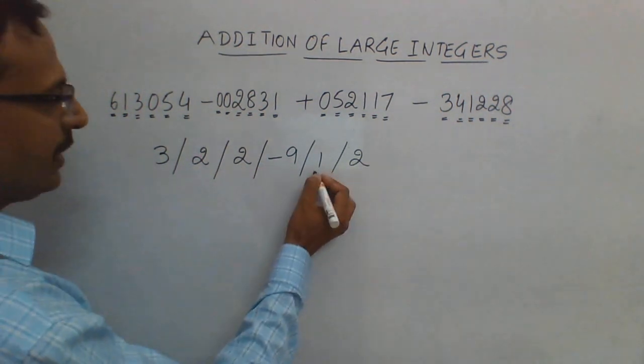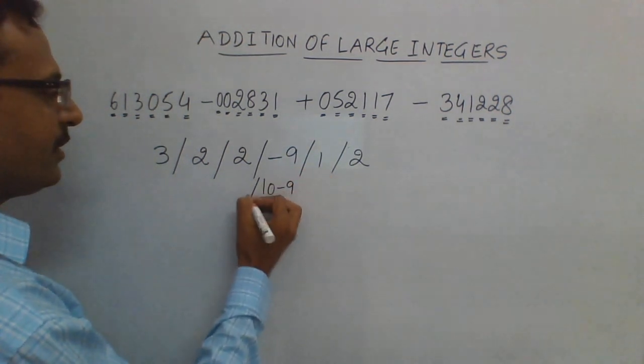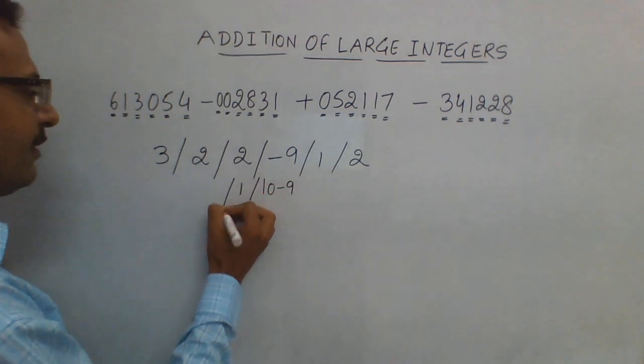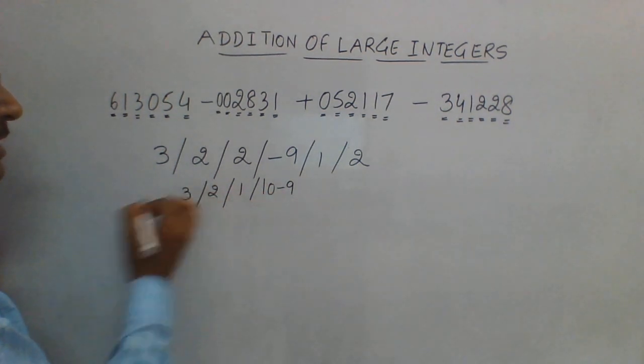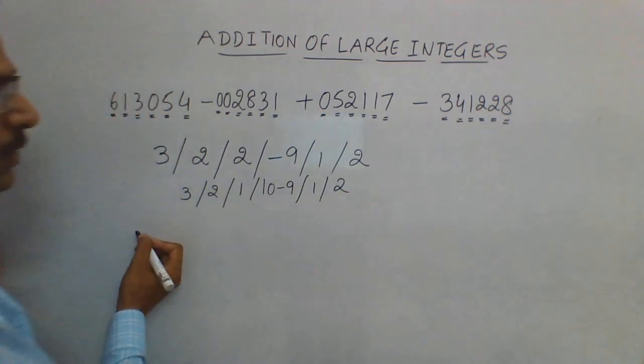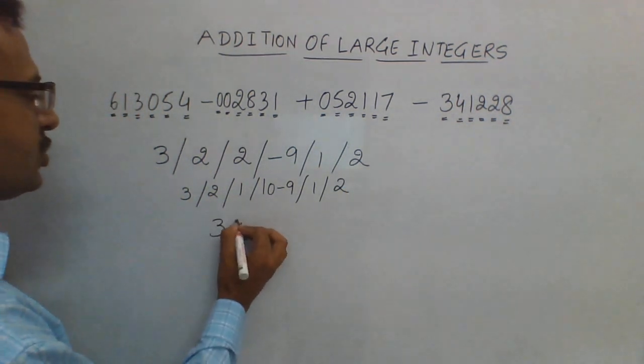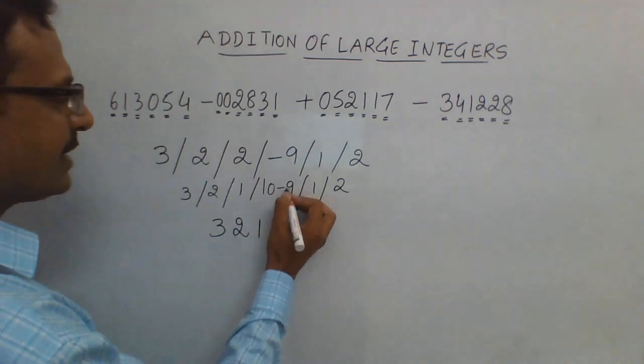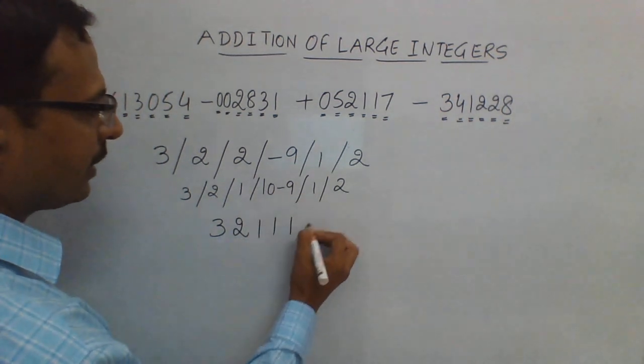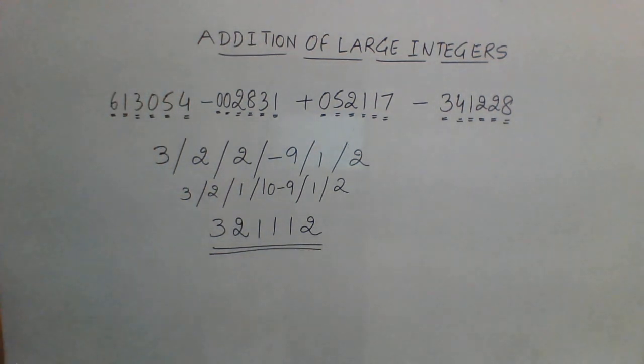Here we have to just carry 1 from here to here to get to the final answer. This will be very easy. So 2, 1, and then this will become 10 minus 9. Here this 2 will become 1, and the further digits will remain the same. So your answer is directly written from here: 3, 2, 1, 10 minus 9 is 1, and again a 1 and a 2. So 321,112 is obtained.